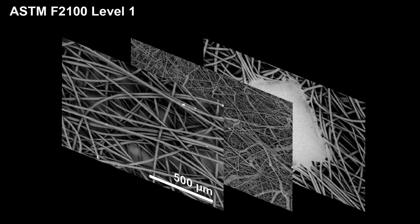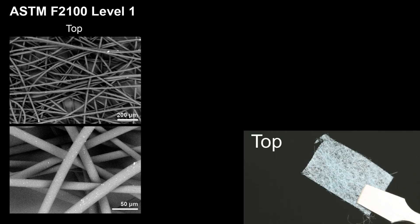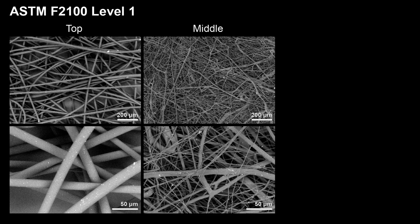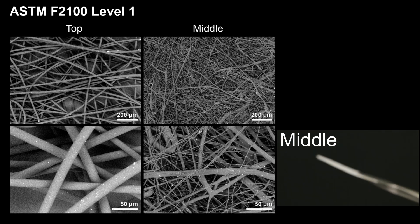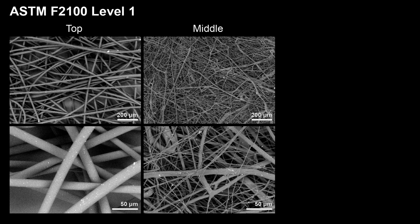Let's look at the level 1 mask in detail. It is composed of three layers, starting with the top layer. The image shown on the top is a low magnification image, while the image shown on the bottom is a high magnification image. The top layer is actually quite thin and you can see through it with your naked eye — the fiber diameter here is about 18 microns. The middle layer is the important filtration layer. Structurally at the microscale, the fiber density is much higher, and the average fiber diameter is much thinner than the top layer, at about 1.8 microns.